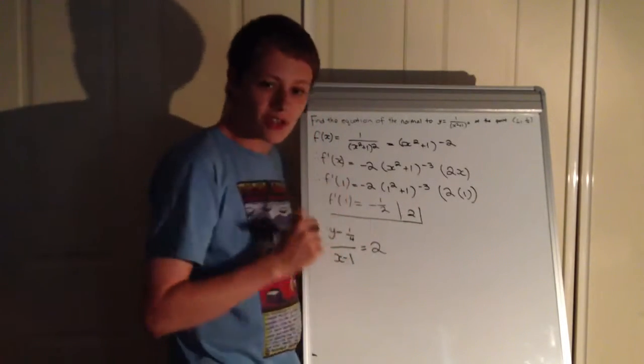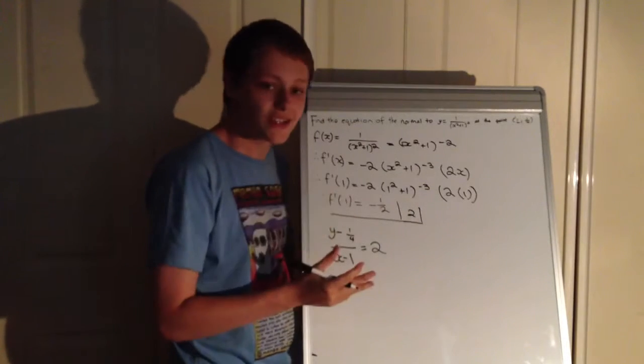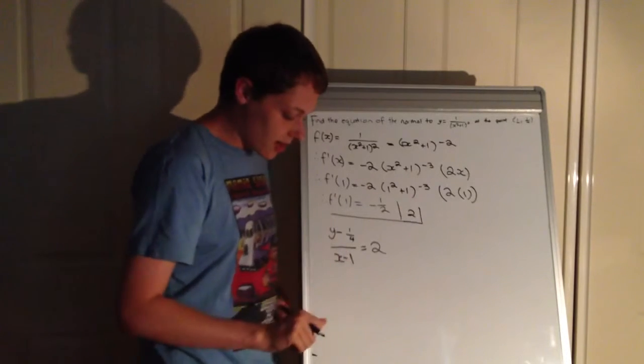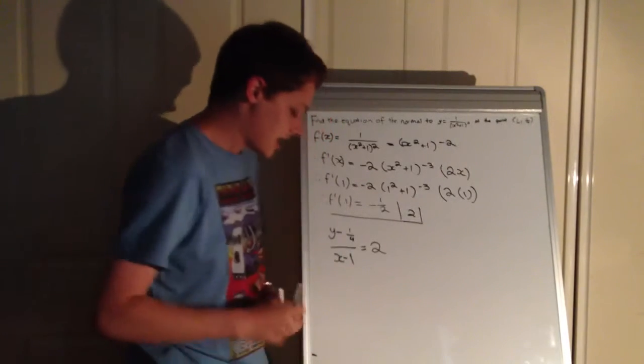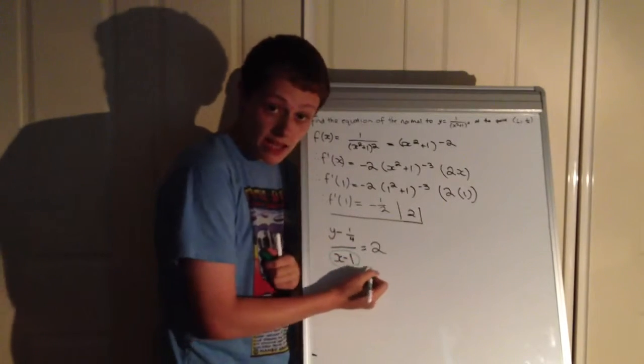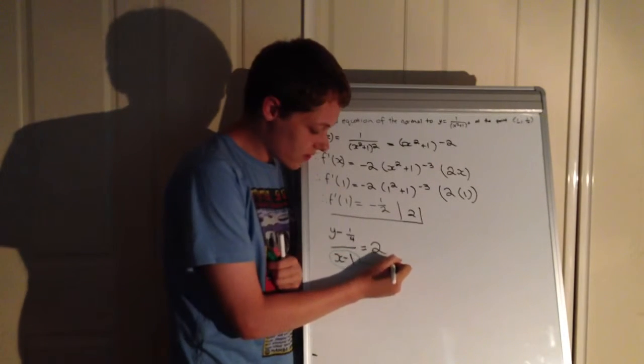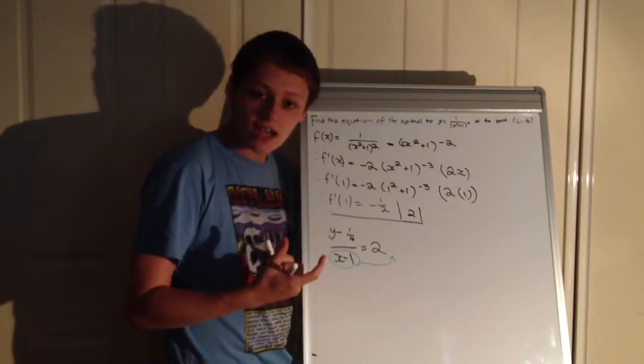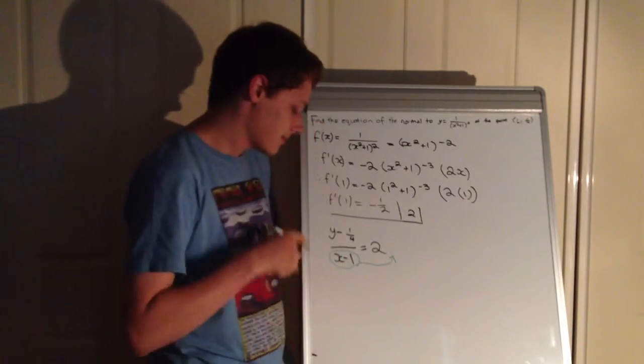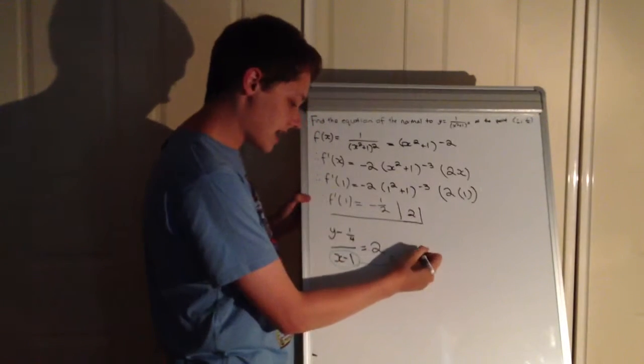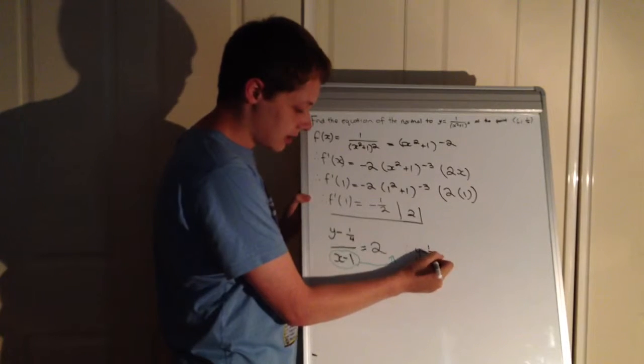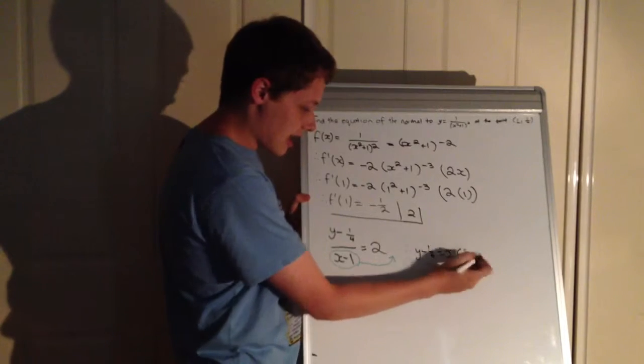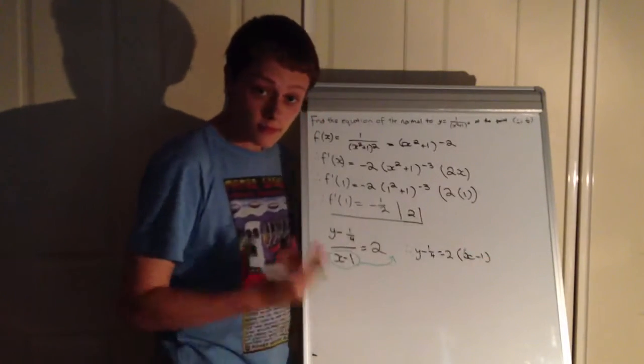Excellent. So now what do we do? We want to isolate y from the equation. In order to do this, what I would do first is I would take this (x - 1) term and bring it to the right-hand side of the equation. So because it's in the denominator on the left-hand side, it'll be in the numerator on the right-hand side. And therefore we get (y - 1/4) equals 2(x - 1).